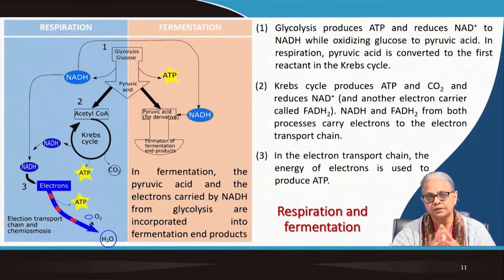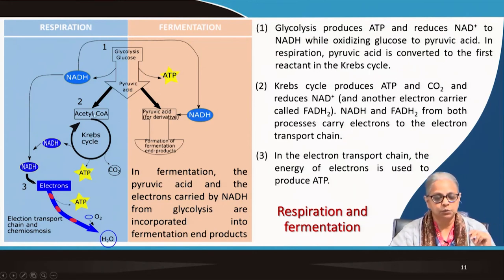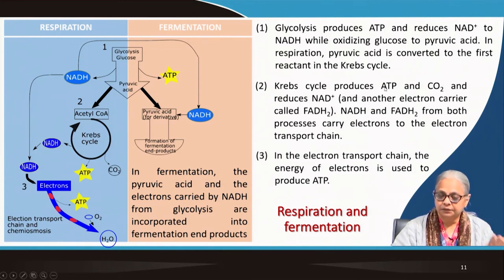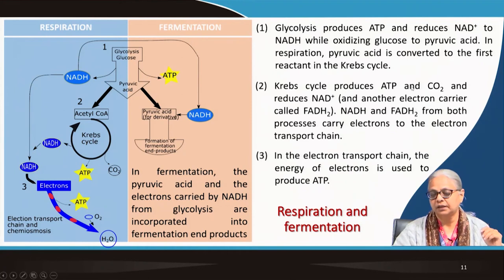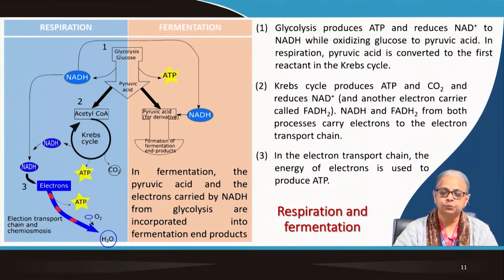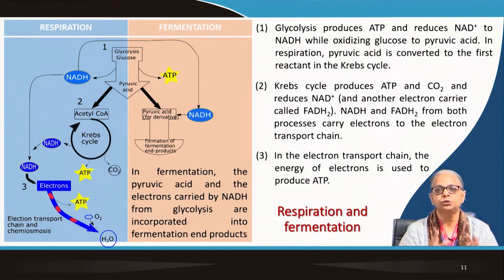This C2 compound enters the citric acid cycle and is converted into two more carbon dioxide molecules, so the entire C3 molecule is completely oxidized — mineralized to three carbon dioxide molecules. In the first step you get NADH and ATP. In the Krebs cycle you again produce ATP, CO₂, and reduce NAD⁺ to NADH. NADH and FADH₂ from both processes carry electrons through the electron transport chain. Protons are pumped out of the membrane to generate proton motive force, and electrons are passed from one carrier to another to produce ATP.